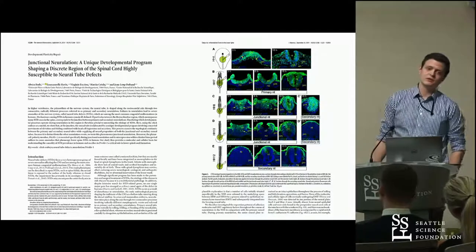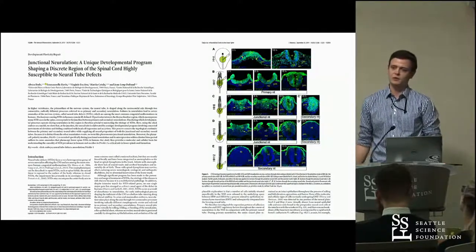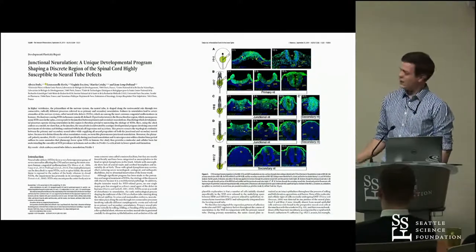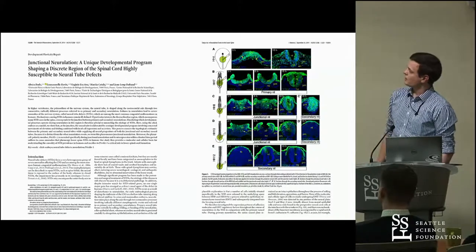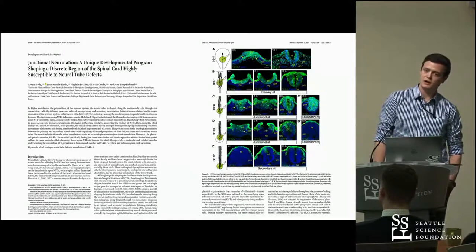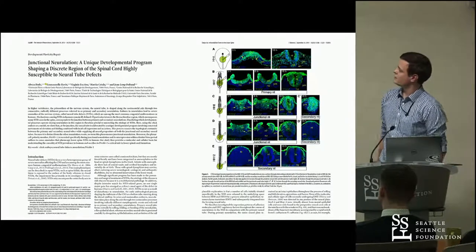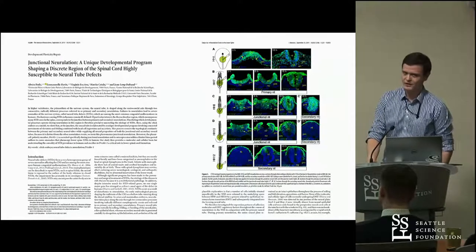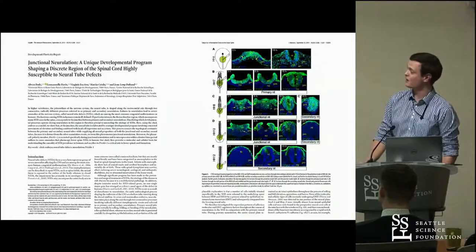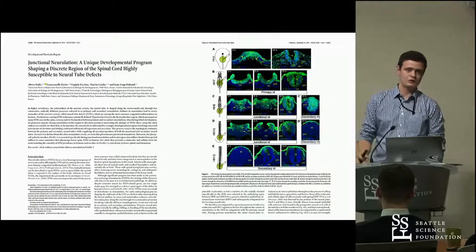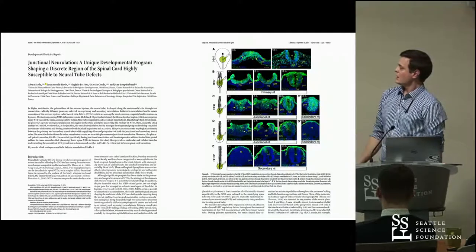Dedy investigated this given the high propensity of thoracolumbar malformations that are seen. Using a chick embryo, they traced over the course of 18 hours the primary, junctional, and secondary neural tube formation. He described it as elevated folding combined with local cell ingression and accretion of these cells, and described the purpose of this interluding process as maintaining topographical continuity between the primary and secondary neural tube.